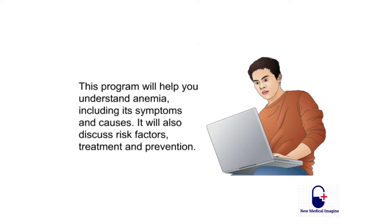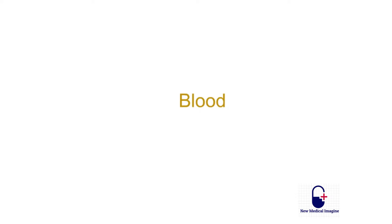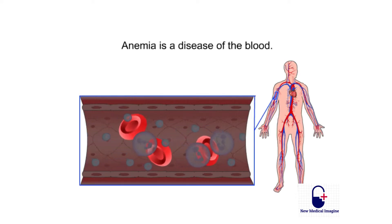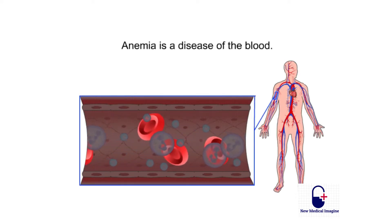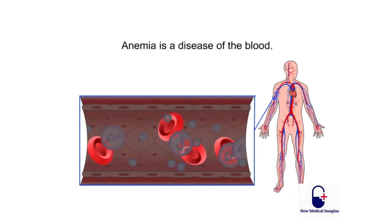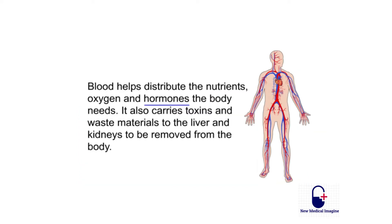Anemia is a disease of the blood. Blood helps distribute the nutrients, oxygen, and hormones the body needs. It also carries toxins and waste materials to the liver and kidneys to be removed from the body.